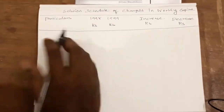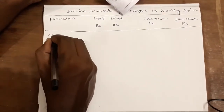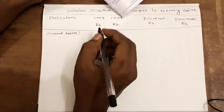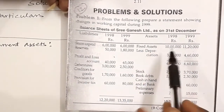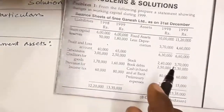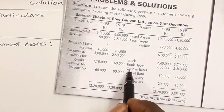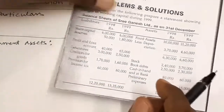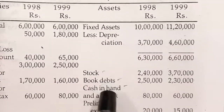Now, current assets. In current assets, fixed assets are not included. Current assets include stocks, book debts, and cash in hand. Buildings, cars, and machinery are not current assets. So stocks, book debts, and cash in hand — these are our current assets.